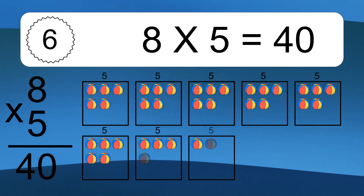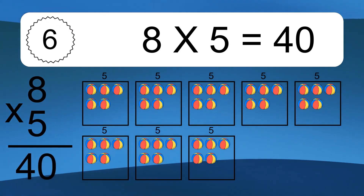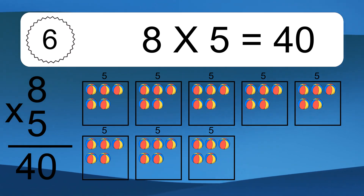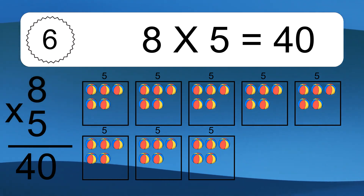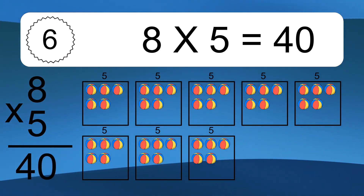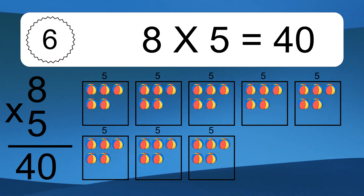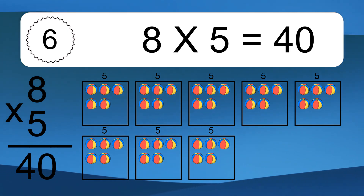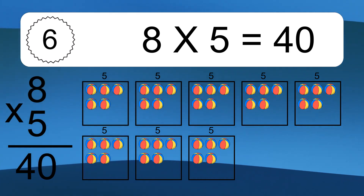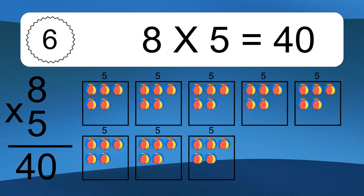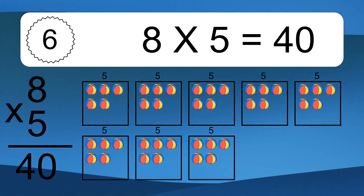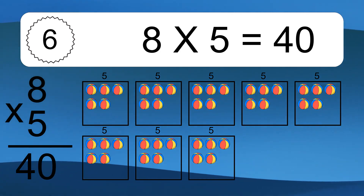8 times 5 equals 40. We have 8 boxes, and each box has 5 colorful balls inside. If you count all the balls in all the boxes together, you will have 8 times 5 balls. This equals 40 balls.